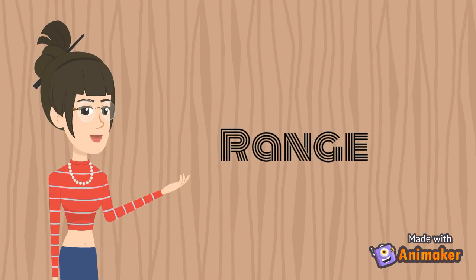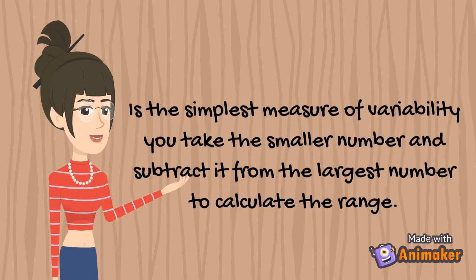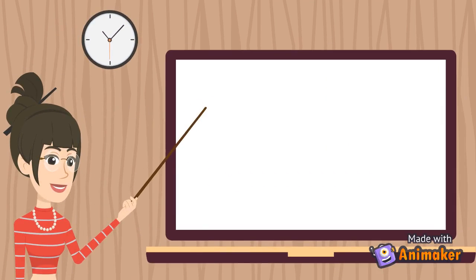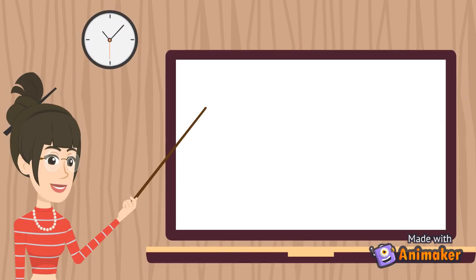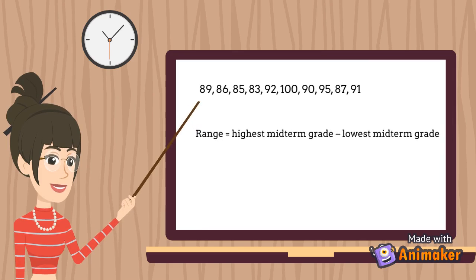The range is the simplest measure of variability. You take the smallest number and subtract it from the largest number to calculate the range. Now, let's calculate the range from the midterm exam grades. The midterm grades listed in numerical order are shown here. Since the range is equal to the highest midterm grade minus the lowest midterm grade, we can easily find the range for this data set.